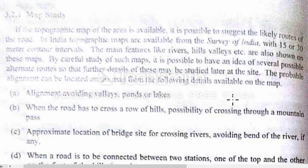If the topographic map of the area is available, it is possible to suggest the likely routes of the road. In India, topographic maps are available from the Survey of India. The Survey of India provides maps with 15 or 30 meter contour intervals. This is the standard contour interval. The main features like rivers, hills, valleys, etc. are also shown on these maps.